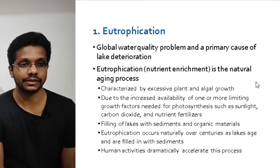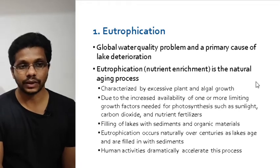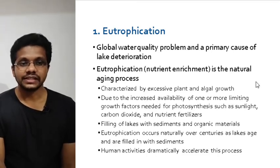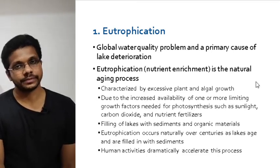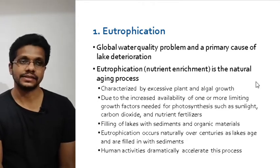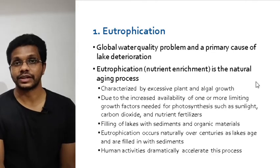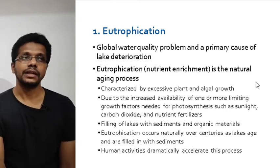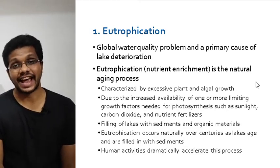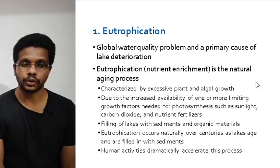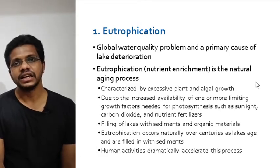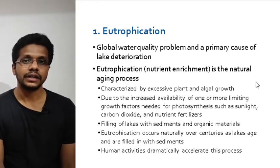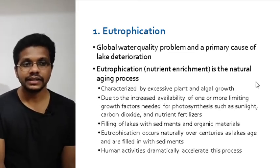Eutrophication is a global issue and a primary cause of lake deterioration. It is actually a natural aging process of lakes — lakes receive runoff from different areas, which leads to the accumulation of nutrients and eventually eutrophication. However, human activity has accelerated this aging process. It is basically characterized by accumulation of growth-limiting substances in a lake, which include sunlight, carbon dioxide, and nutrients.